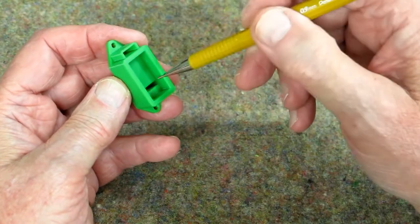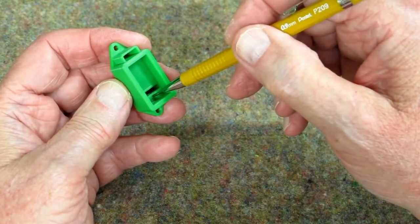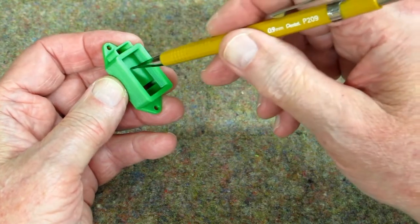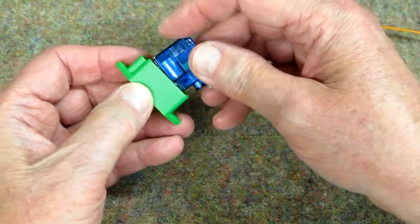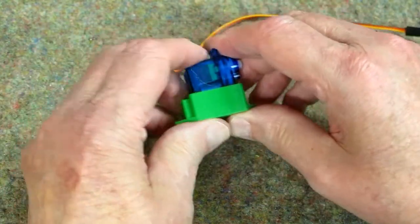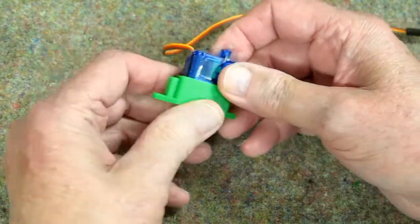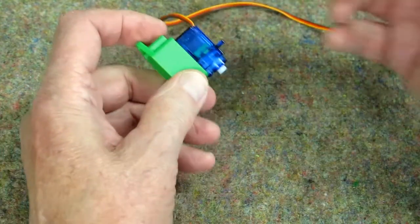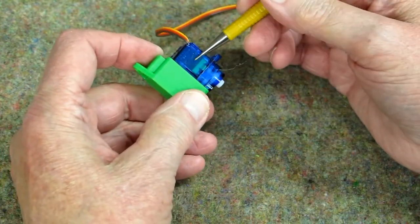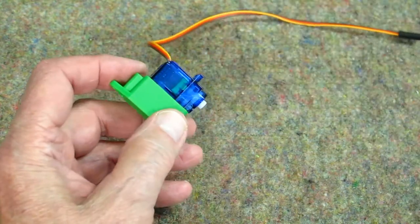When I designed this, I made this surface 3 tenths of a millimeter higher than this. When the servo is in there and it snaps down tight, when it's all the way down, that makes the center line of the output shaft parallel with this surface.